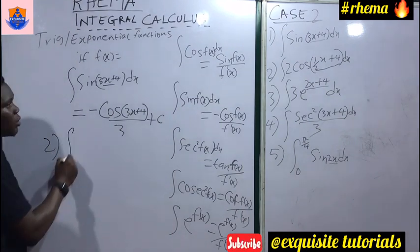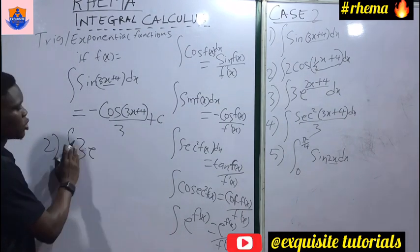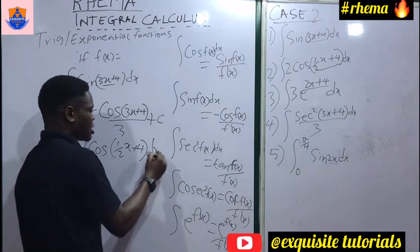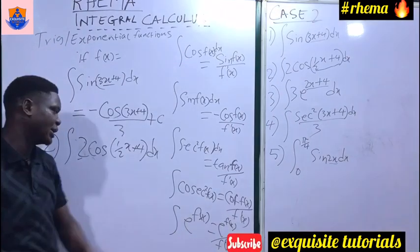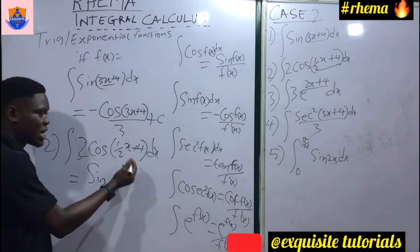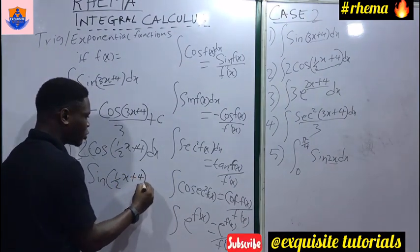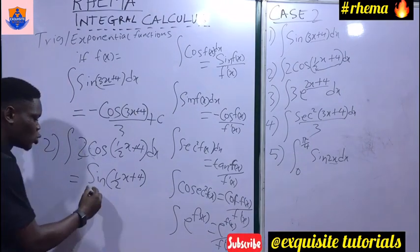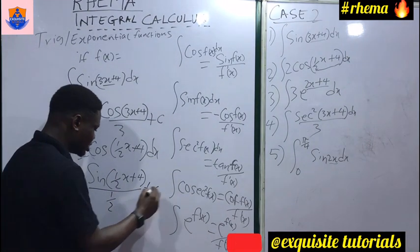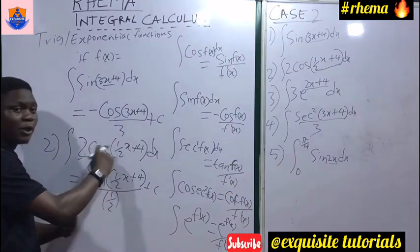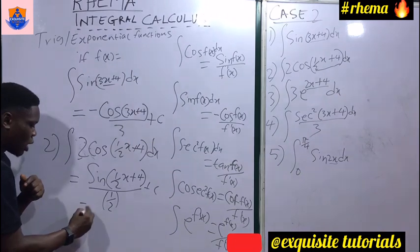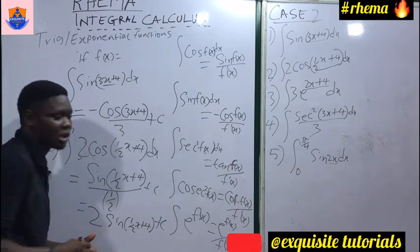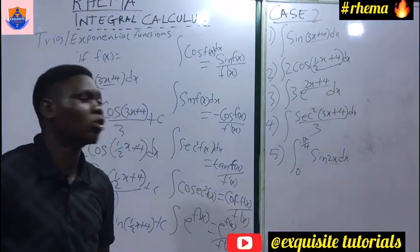Question 2: integrate 2cos(one-half x plus 4) dx. Integrating cos gives sin, so we write 2 sin(one-half x plus 4). Differentiating the inner function one-half x plus 4 gives one-half, so we divide by one-half — which is the same as multiplying by 2. The final answer is 2 times 2 sin(one-half x plus 4) — wait, simplified: the 2 from the constant and dividing by one-half gives a factor of 4. Corrected: the answer is 4 sin(one-half x plus 4), plus C. Remember, f(x) must be linear to use this shortcut.